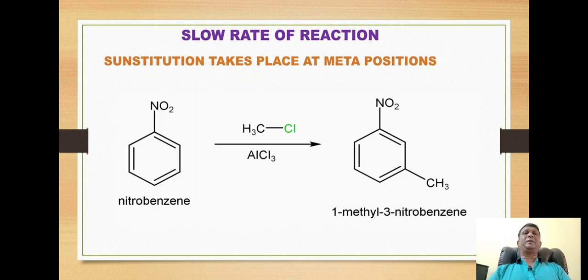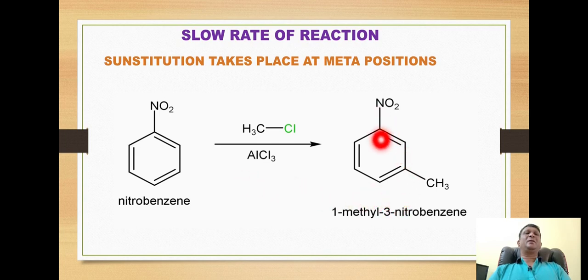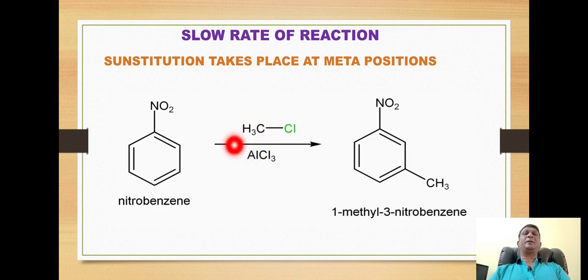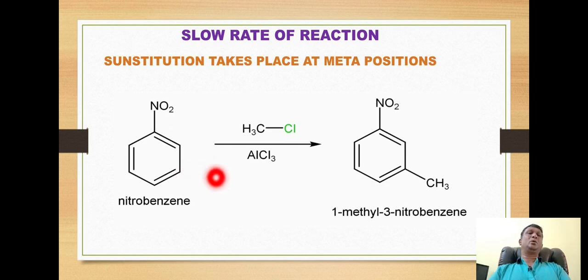The rate of the reaction is slow and the reaction takes place over hours, with substitution occurring at the meta position. For example, when nitrobenzene is reacted with methyl chloride in the presence of aluminum chloride, the product obtained is 3-nitrotoluene. This is an example of a Friedel-Crafts alkylation reaction where the methyl cation is the electrophile, and it is directed to the meta position.